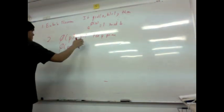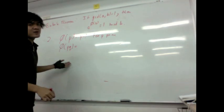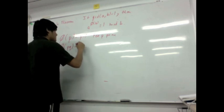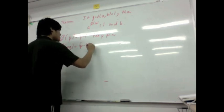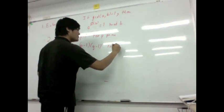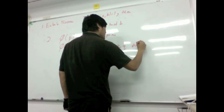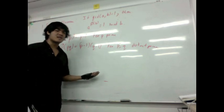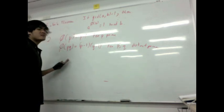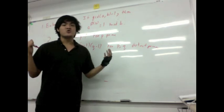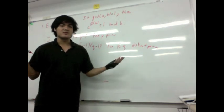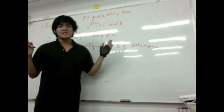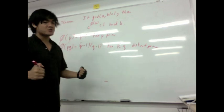Also, another theorem says: phi of P times Q, where P and Q are distinct primes, equals P minus 1 times Q minus 1. These are the key theorems you'll need. You'll also need basic modular arithmetic. For the proofs, look at my earlier lectures on Fermat's little theorem and Bezout's identity on my YouTube page.